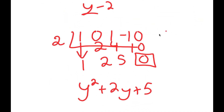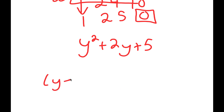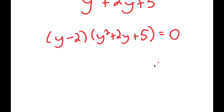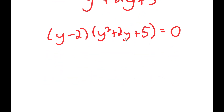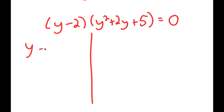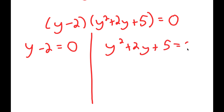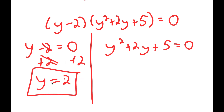So y cubed plus y minus 10 divided by y minus 2 equals y squared plus 2y plus 5, meaning we can write y minus 2 times y squared plus 2y plus 5 equals 0. Using this equation, I get two equations: y minus 2 equals 0, and y squared plus 2y plus 5 equals 0. For y minus 2 equals 0, I add 2 on both sides and get y equals 2, which is the solution we already found.